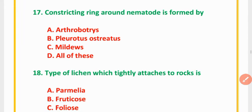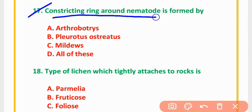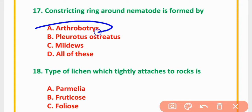MCQ Number 17: Constricting ring around nematodes is formed by — Arthrobotrys, Pleurotus ostreatus, Mildew, or Alafa. The correct option is option A: Arthrobotrys.